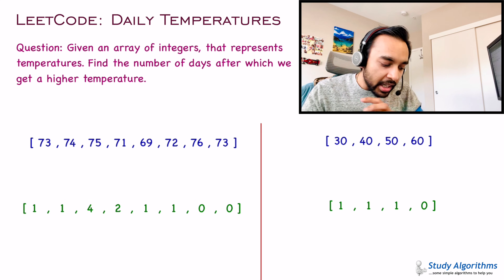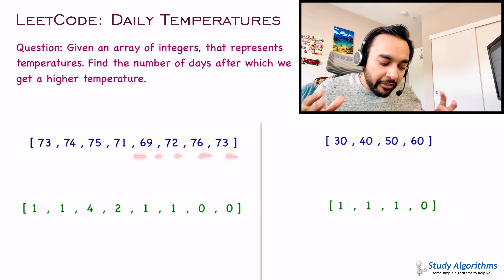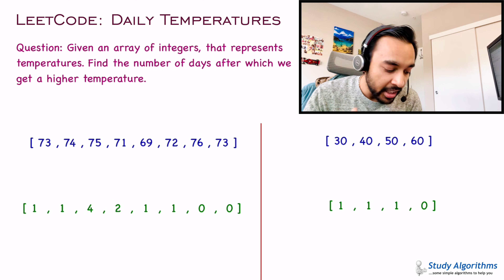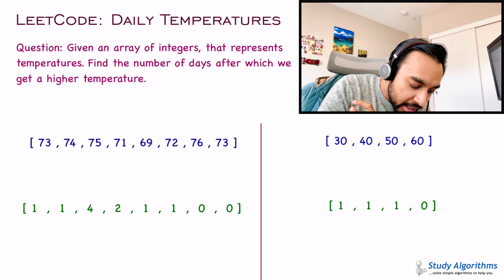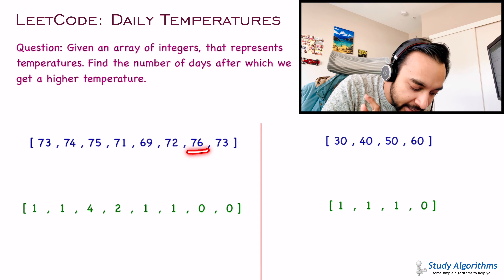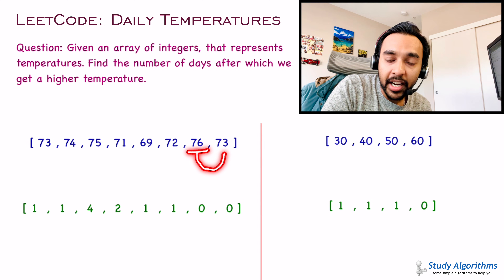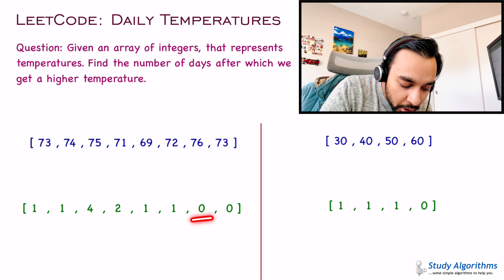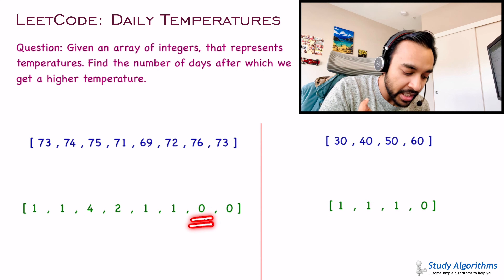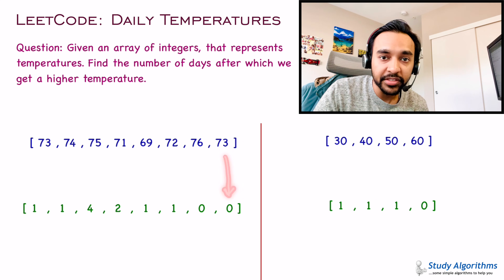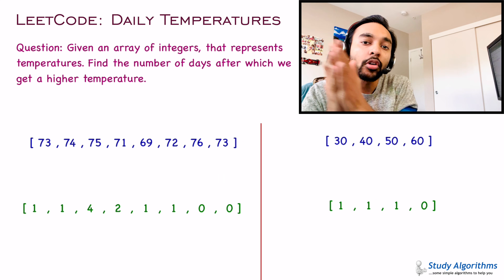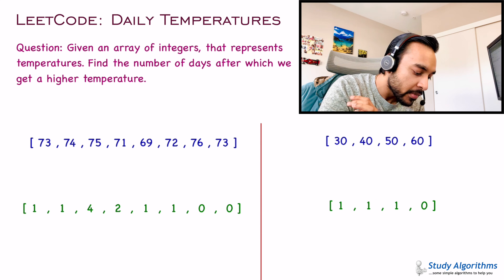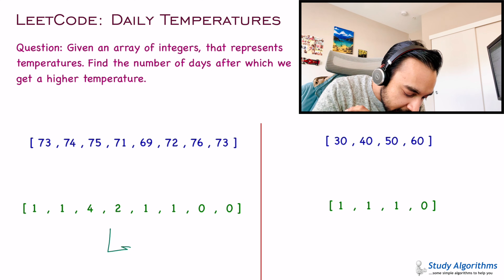Similarly, you have to find out the values for all of the days. But what happens when you land at 76? You try to look ahead — there is only one day and you cannot find a higher temperature. So you need to output 0 in that case. Similarly, for the last day it will always be 0 because you do not have any additional days. So for our first test case, this array will be your answer.